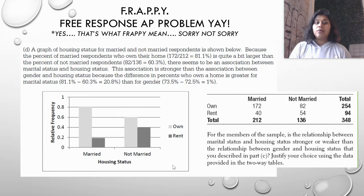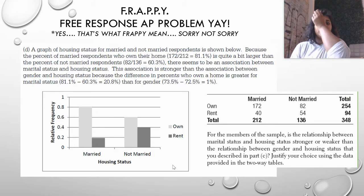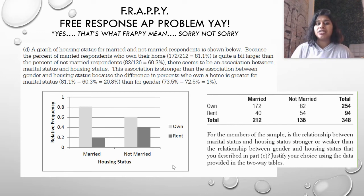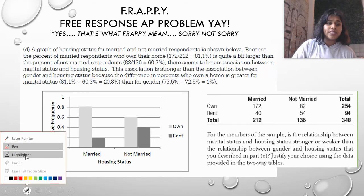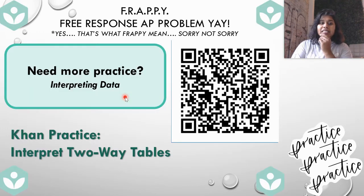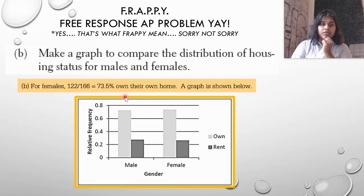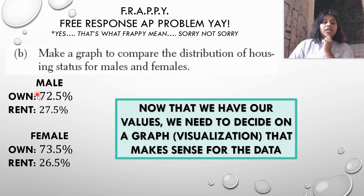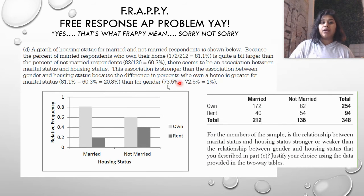The percent of married respondents who own their home — 81.8% — is quite a bit larger than not-married respondents at 60.3%, so there seems to be an association between marital status and housing status. This association is stronger than the one between gender and housing status, because the difference in percent who own is greater for marital status (a 20.8% gap) versus gender, where female-owned 73.5% minus male-owned 72.5% gives only a 1% difference.